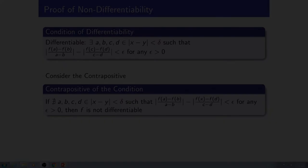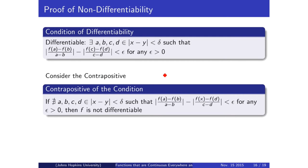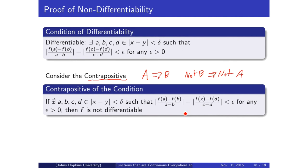Now that we've proven continuity, we want to prove non-differentiability. We're going to go back to the original condition of differentiability — basically saying we can put a non-zero lower bound on the difference between the slopes of two nearby points. We're going to use the contrapositive of that condition. A contrapositive: if statement 'if A is true then B is true,' its contrapositive is 'if B is not true then A is not true' — and they are logically equivalent. So if there is a lower bound such that the difference between the two slopes is less than epsilon for any positive epsilon, then F is non-differentiable.